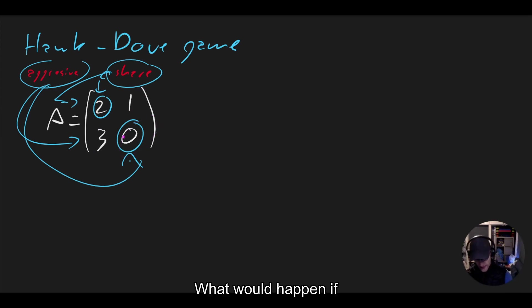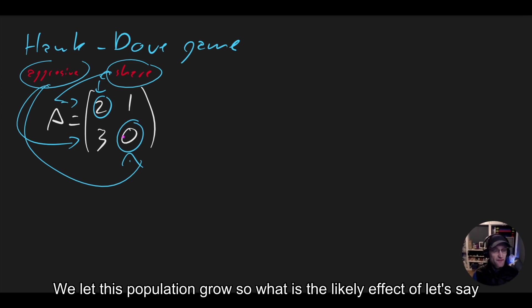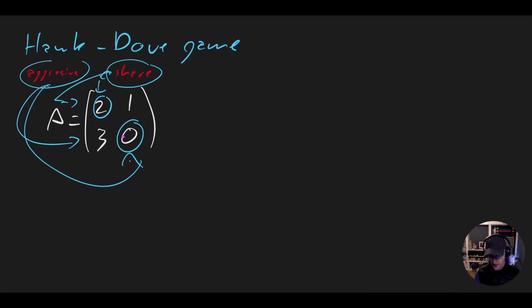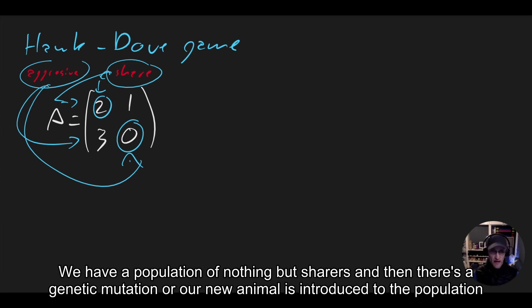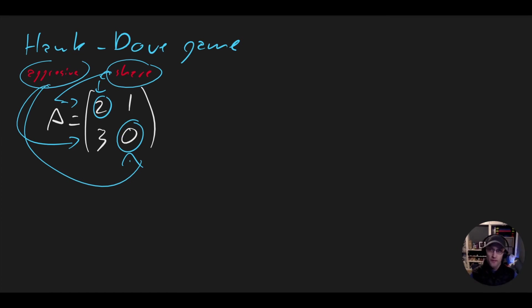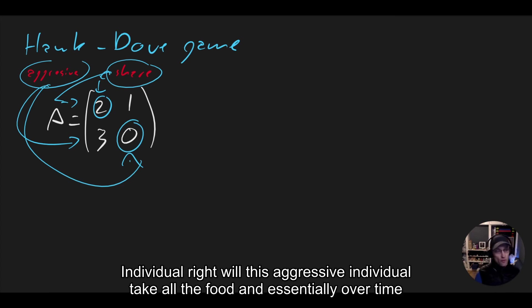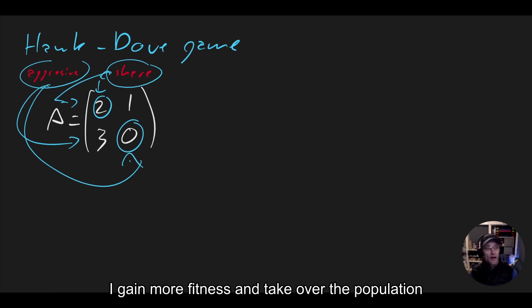Now, what would happen if we let this population grow? So what is the likely effect of, let's say, we have a population of nothing but sharers, and then there's a genetic mutation or a new animal is introduced to the population, and we have an aggressive individual?